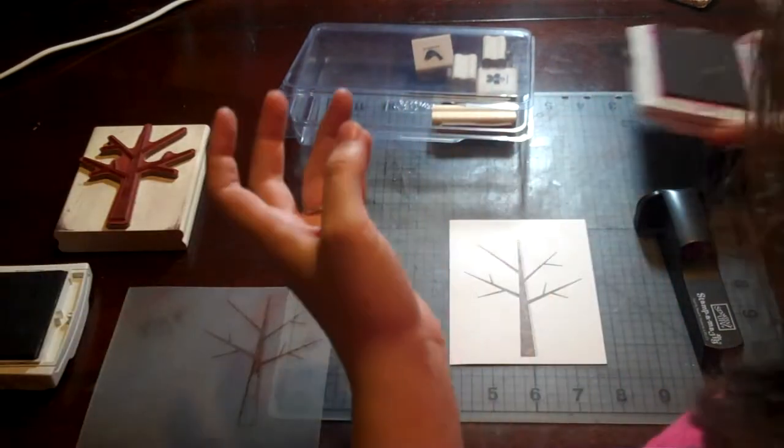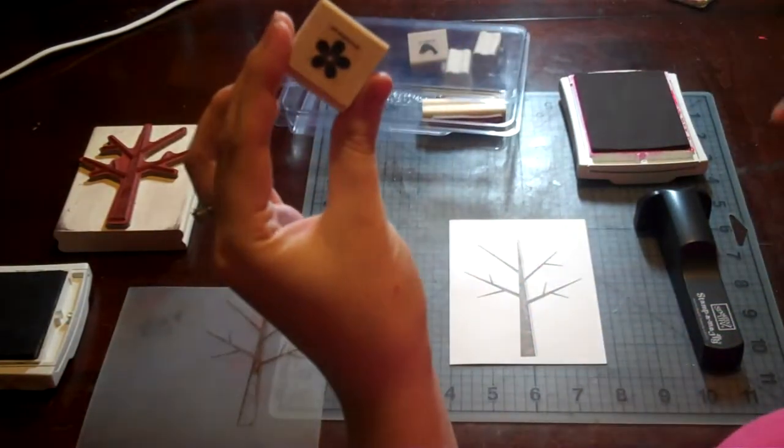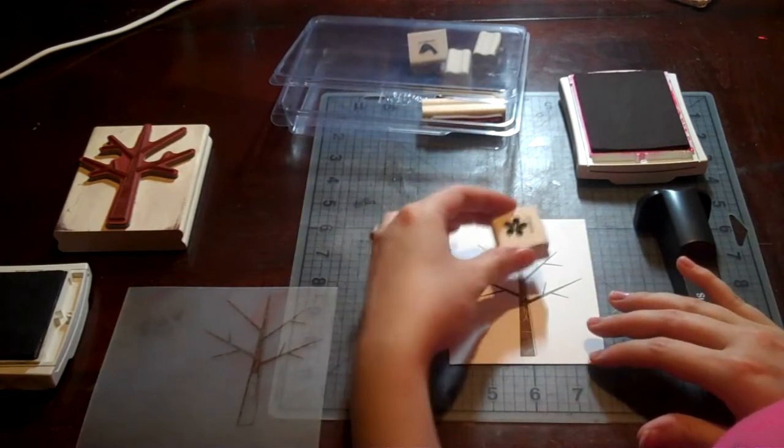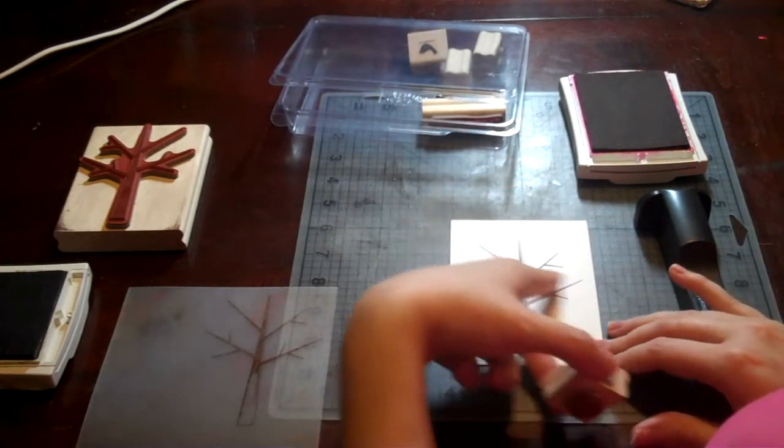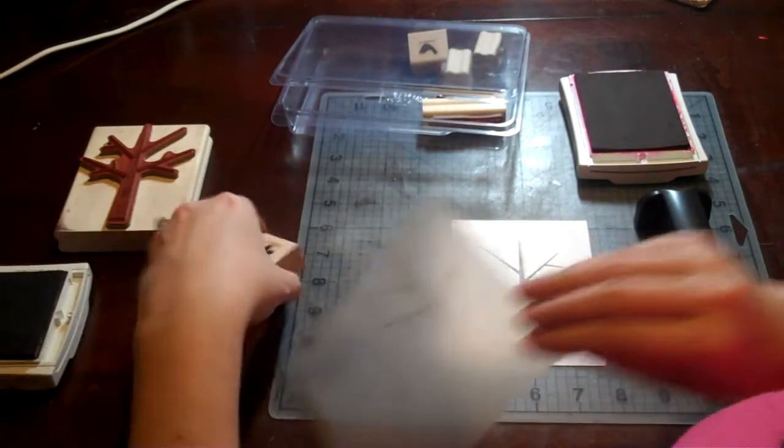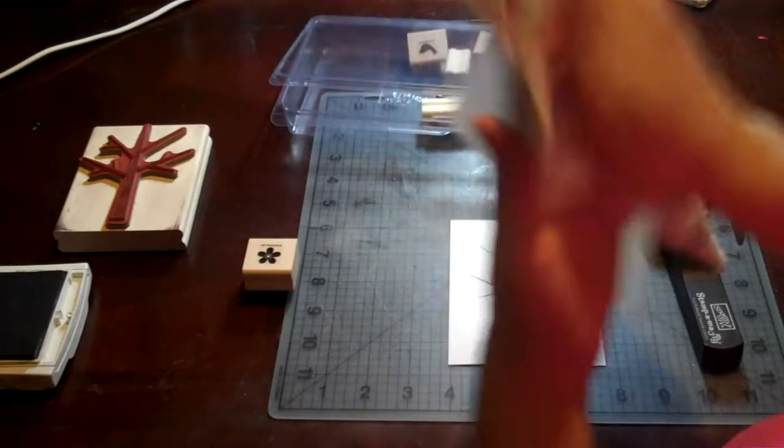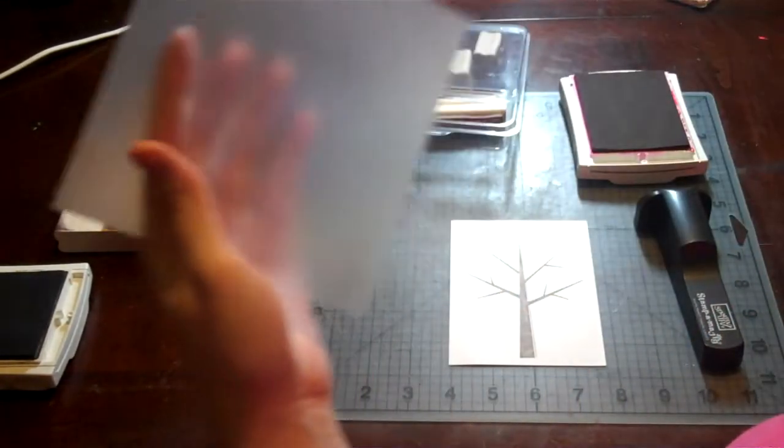Now for the next part, I'm going to stamp these little flowers all over my little tree. I want the flowers to be on each end of these branches. So I need to wipe off my Stampamajig so I can reuse it. I always just have a little washcloth, wipe it all clean.